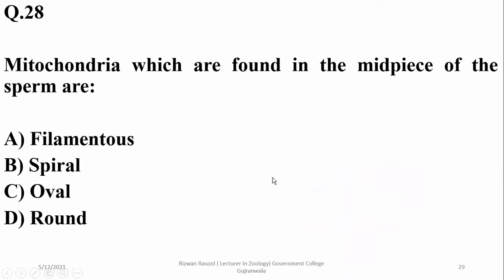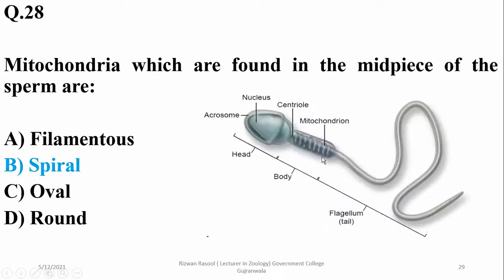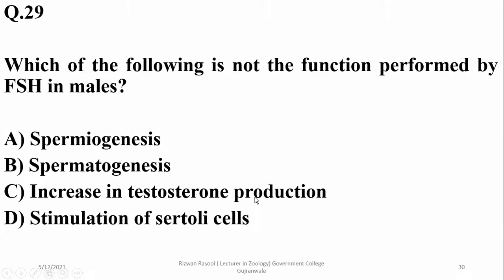Question number twenty-eight: mitochondria found in the mid-piece of the sperm are spiral in their configuration, as you can see the spiral mitochondria there. Question number twenty-nine: which of the following is not a function performed by FSH in males? It is spermatogenesis — that is actually a function FSH does perform, so that would be the odd one.